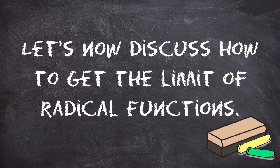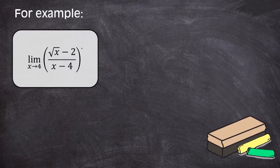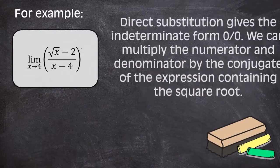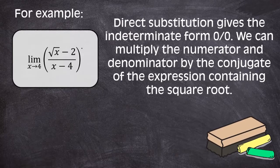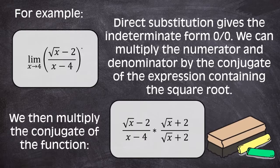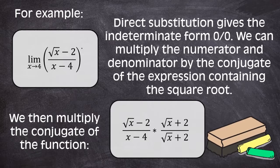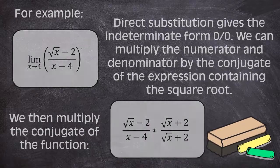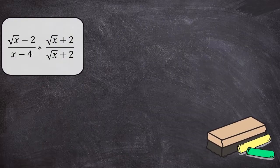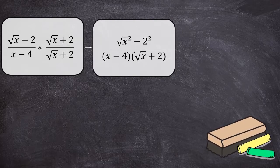Let's now discuss how to get the limit of radical functions. For example, the limit of the quantity of the square root of x minus 2, over x minus 4, as x approaches 4. Direct substitution gives the indeterminate form of 0 over 0. We can multiply the numerator and denominator by the conjugate of the expression containing the square root. The conjugate of the two-term expression is just the same expression with the subtraction switched to addition or vice versa. In this case, the conjugate of the square root of x minus 2 is the square root of x plus 2. This gives us the square root of x minus 2 over x minus 4 times the square root of x plus 2 over the square root of x plus 2. We will use the FOIL method for the numerator and then no need to multiply the denominator because we will cancel it later.